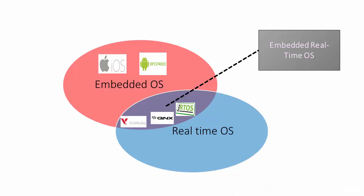Strictly speaking, mobile operating systems like Android and iOS may not fall into the category of pure general-purpose OS. You can consider them in the category of embedded OS. So all the real-time operating systems just discussed will fall into the category of embedded real-time operating systems.